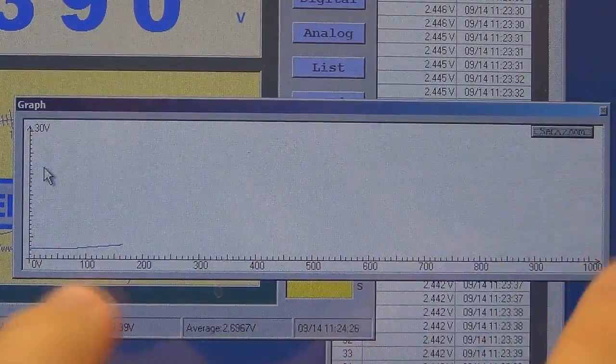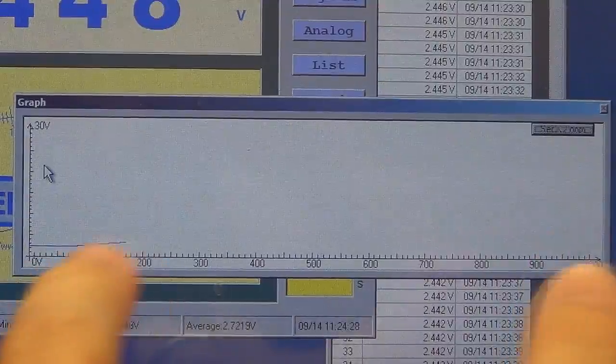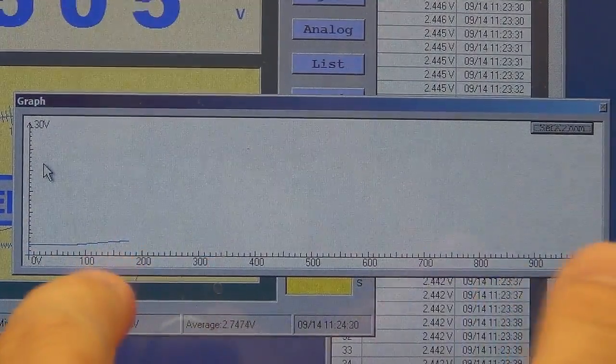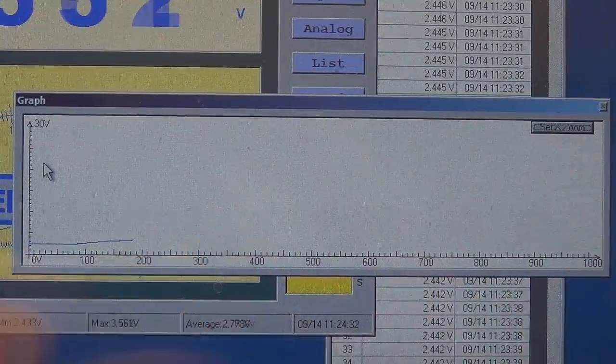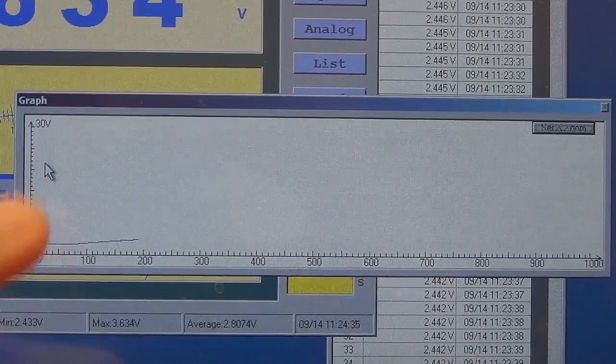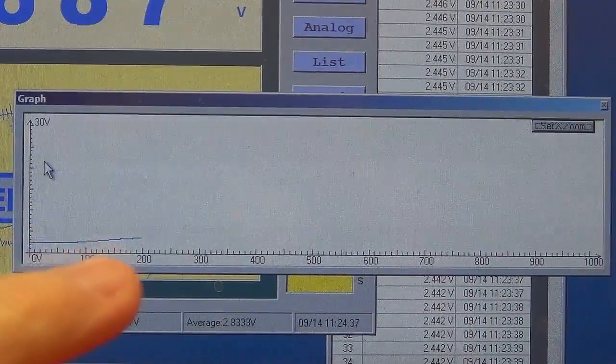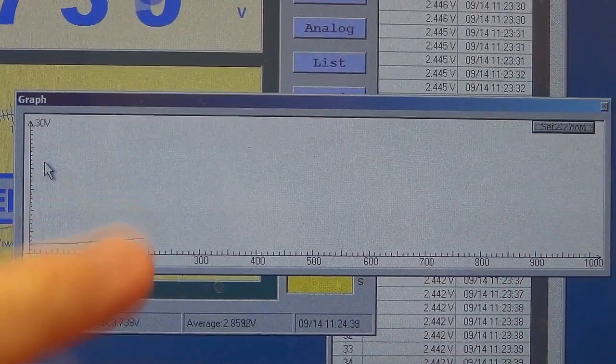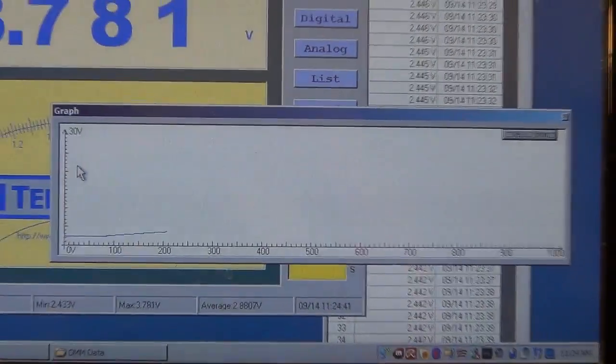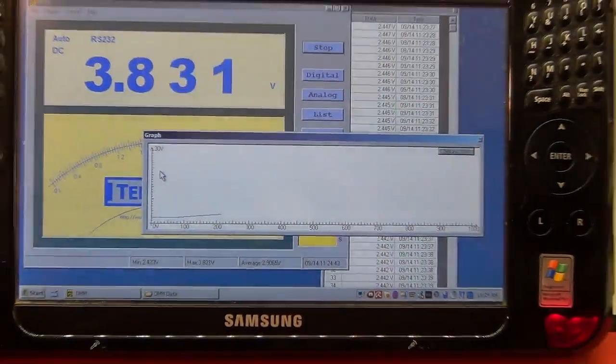Now you've also got a zoom button so you can change the x-axis here if you want a smaller x-axis. And you can even define that you want a negative axis as well. So that works a treat. I'll go into a variable mode where we play around with it going up and down. But as you can see, it just works a treat.